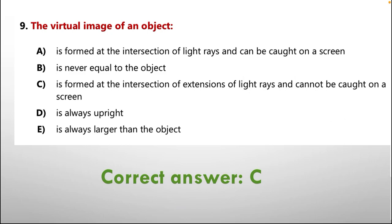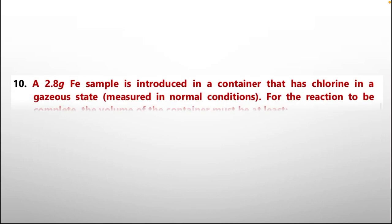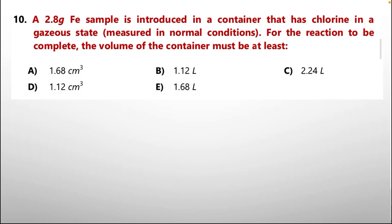Question number 10: a 2.8-gram iron sample is introduced in a container that has chlorine in gaseous state measured in normal conditions. For the reaction to be complete, the volume of the container must be at least — option A: 1.68 cm³, B: 1.12 liters, C: 2.24 liters, D: 1.12 cm³, E: 1.68 liters.